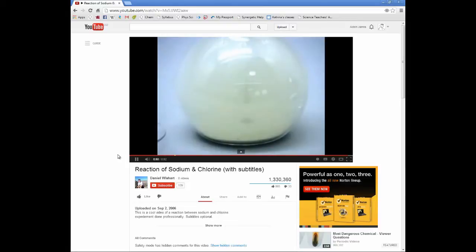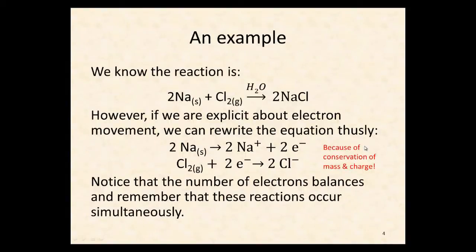So we know here that the reaction is between two equivalents of sodium solid and an equivalent of chlorine gas. If we're explicit about what's actually going on here and look at the electron movement, we can break each of these species down into individually what's occurring in each one. So you can see here with the sodium, sodium is actually becoming two lots of sodium ions and two electrons. And this is because of the conservation of mass and charge. So for the two sodium atoms, there must be, if we produce the two sodium ions, we need also the two electrons to balance that mass and charge.